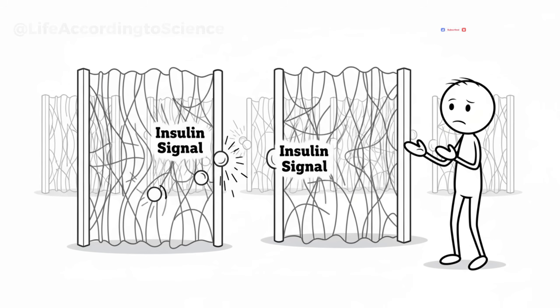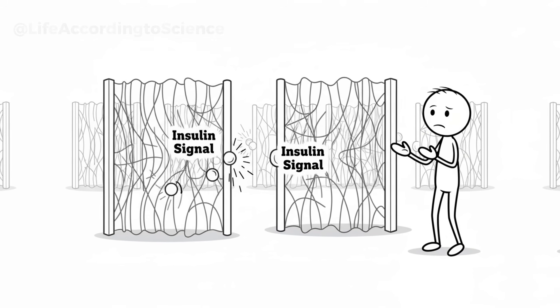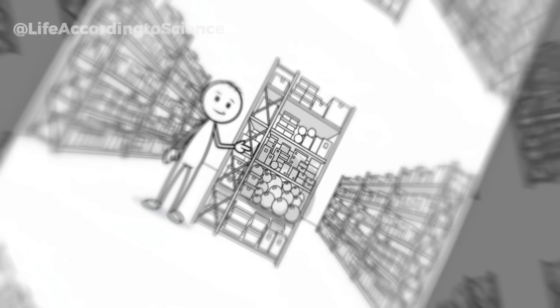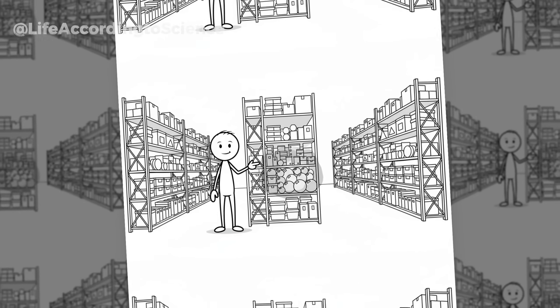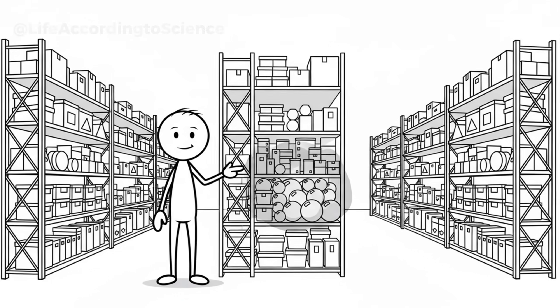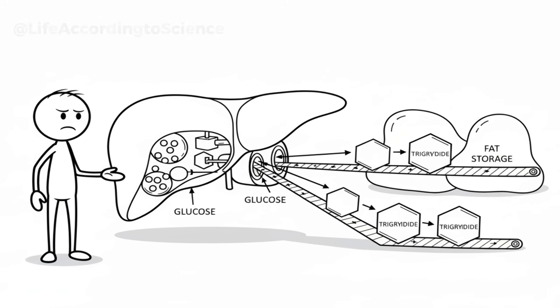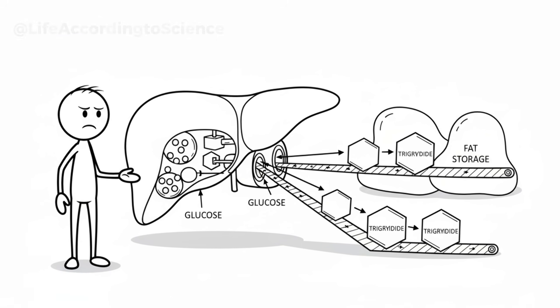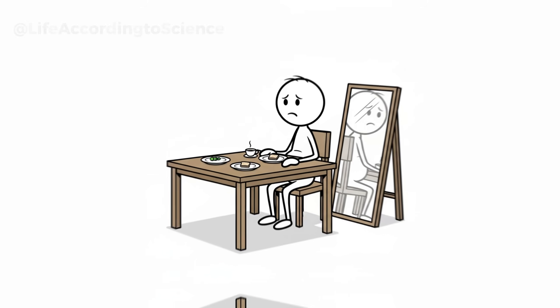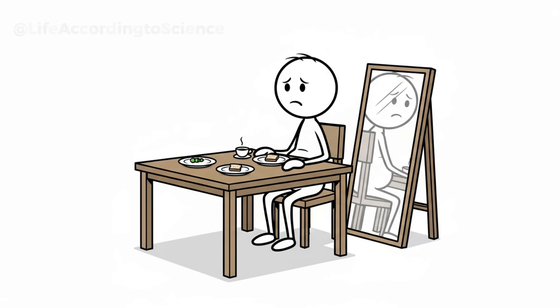Insulin's job is to move glucose into your cells for energy, but when it's constantly elevated, your body loses sensitivity to it, a condition known as insulin resistance. And guess where the excess glucose ends up? Around your waist. The liver converts it to triglycerides, which then accumulate as visceral fat. It's a slow, silent process that happens long before weight gain becomes visible.